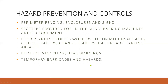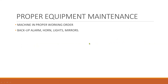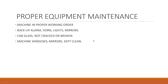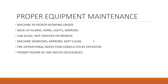Temporary barricades and hazards must also be considered. For proper equipment maintenance, take the following into consideration: the machine must be in proper working order; backup alarms, lights, and mirrors must function; hub bolts must not be cracked or broken — make sure of this. Machine windows and mirrors must be kept clean. Pre-operational inspection should be conducted by the operator, with prompt repair of any noted deficiencies.